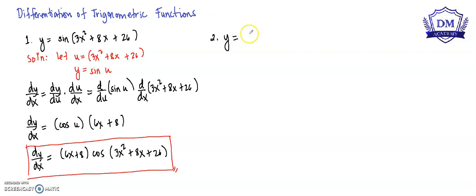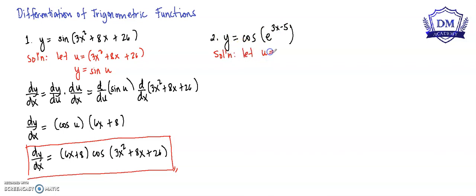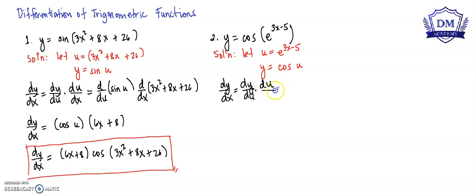Our function y is equal to the cosine of e raised to 3x minus 5. Using the chain rule, we let u be equal to e raised to 3x minus 5, so our function y is equal to cosine u. Using the chain rule, dy/dx is equal to the derivative of y with respect to u multiplied by the derivative of u with respect to x.